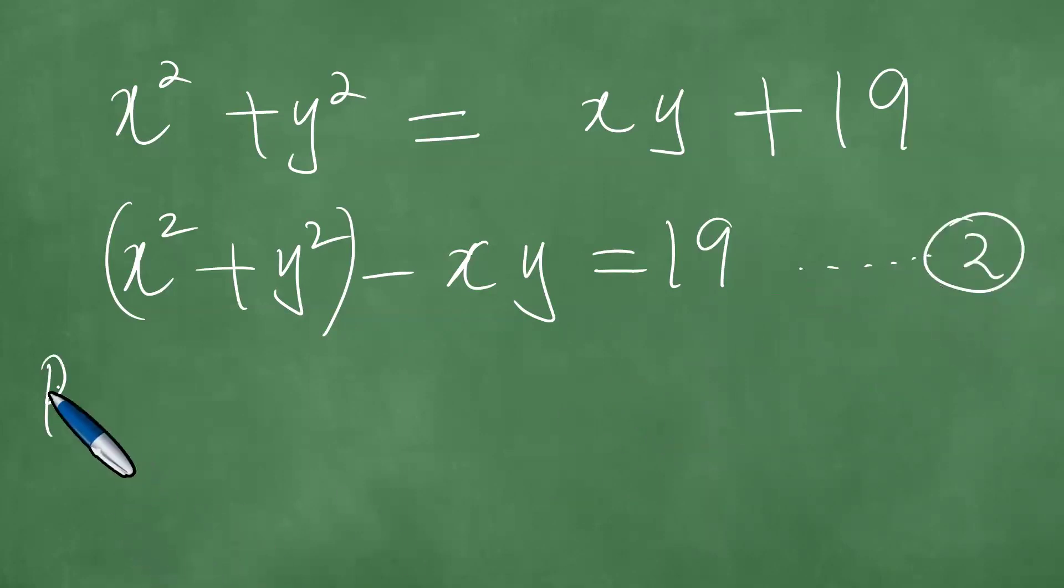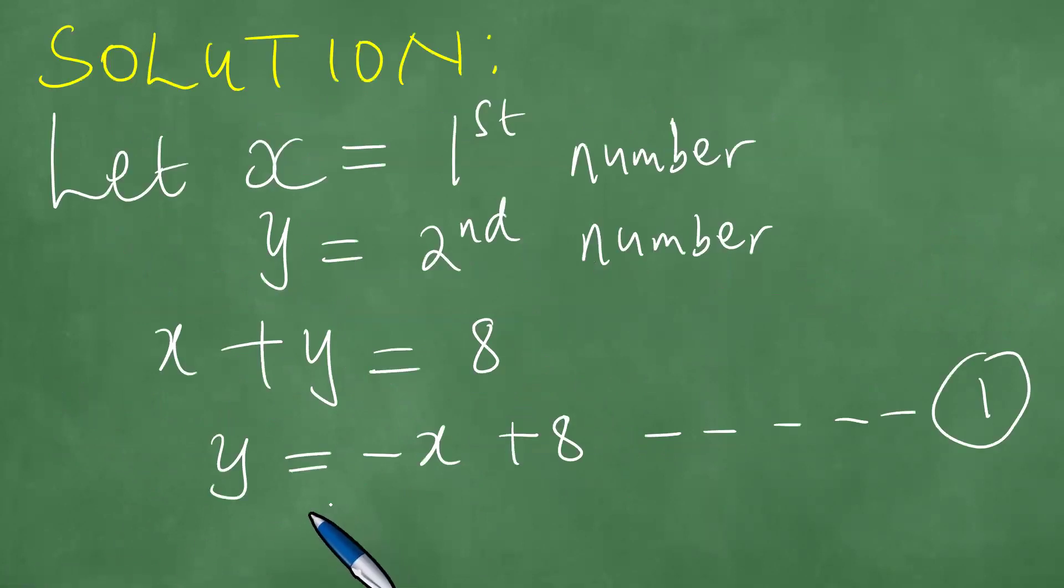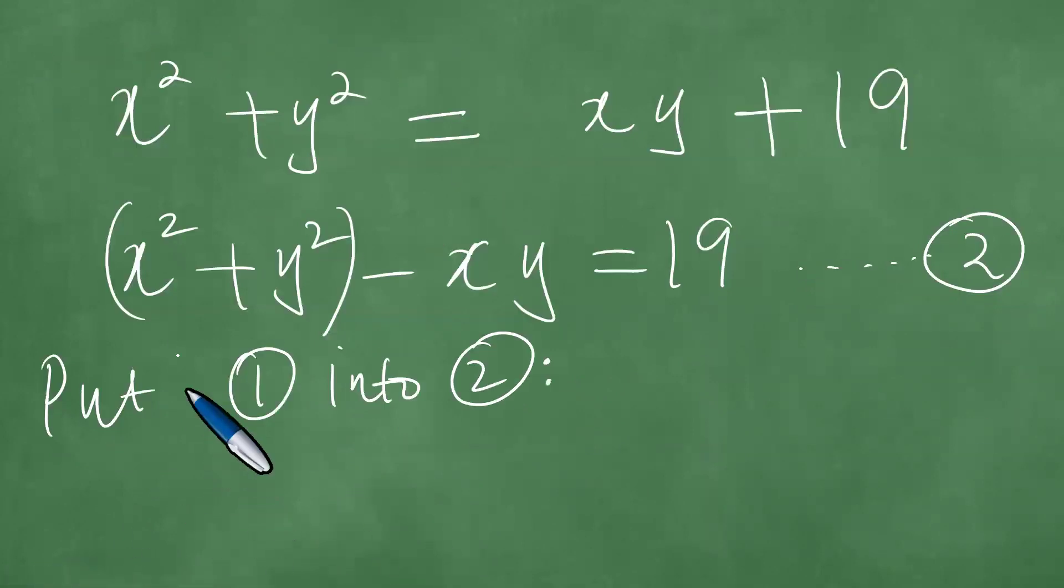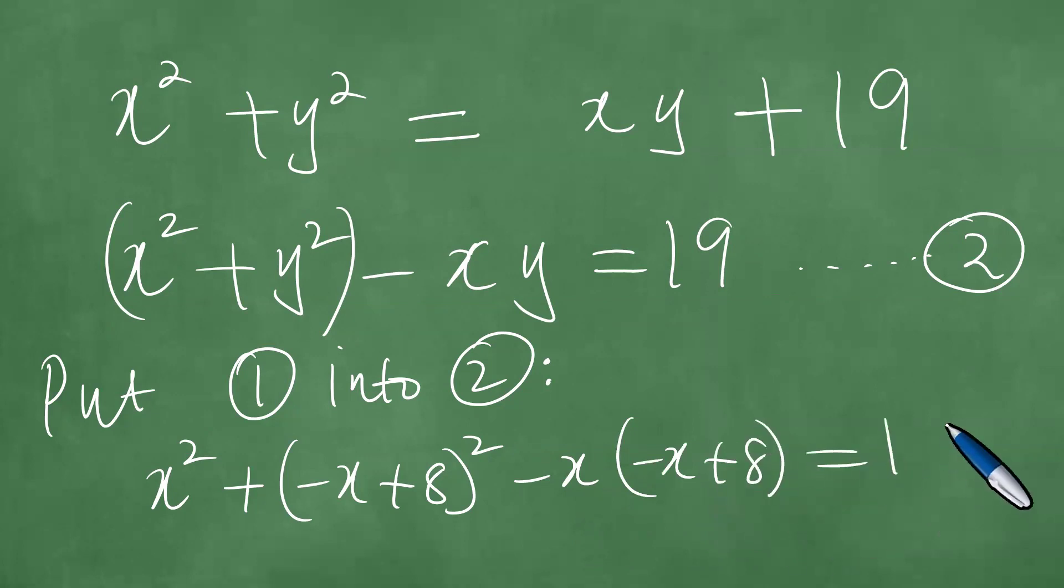Now we can then proceed to say put one into two. Put one into two, meaning y = -x + 8, we put that into two. So this, therefore, becomes x². In the place of y, you have -x + 8. You square this, -x + 8, and the result is 19. So in the place of y, we have put -x + 8.